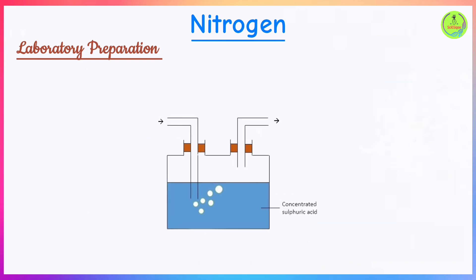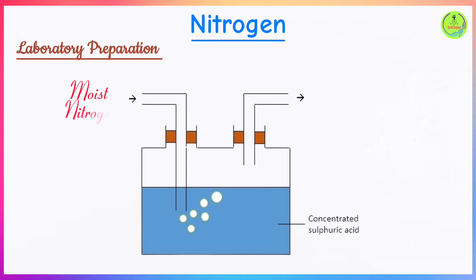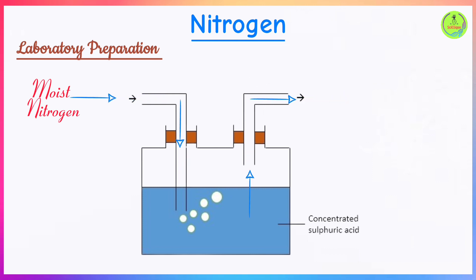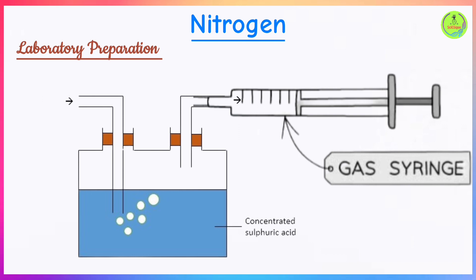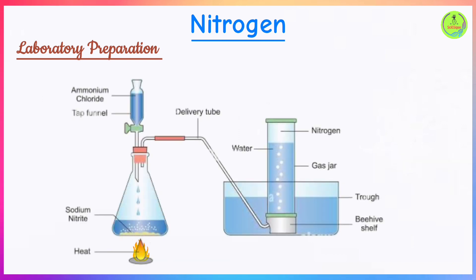To collect dry nitrogen gas free from moisture, pass it through a tube containing concentrated sulfuric acid, which acts as a drying agent; then collect it using a syringe. As a precaution, when heating is involved and gas is collected over water, always remove the delivery tube from the water before stopping the heating to prevent sucking back of water.